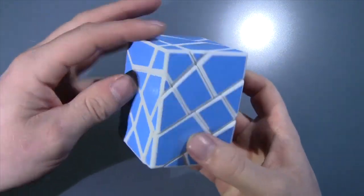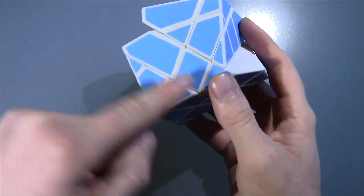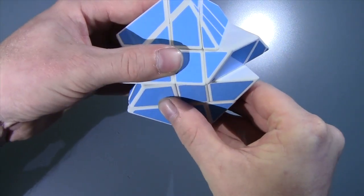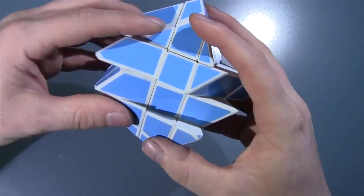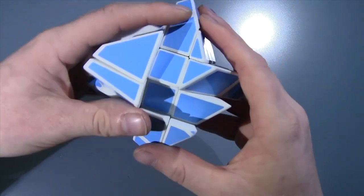Now in order to scramble this puzzle, you need to turn the cube so they're offset a little bit. And now you can go ahead and make another turn. You can see that it turns very smooth.